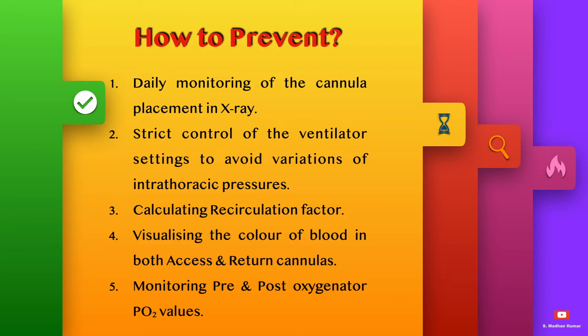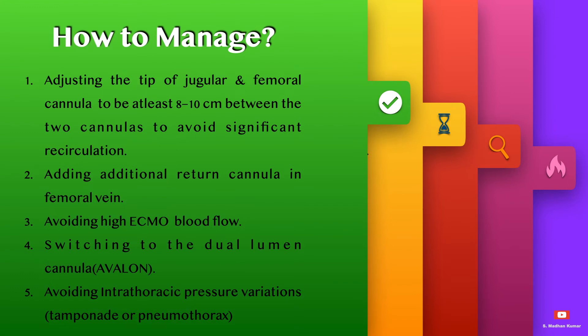Recirculation can be assessed and prevented by monitoring the cannula placement on X-ray every day, strict control of the ventilator settings to avoid variations of intrathoracic pressures, calculating the recirculation factor, visualizing the color of blood in both access cannula and return cannulas, and monitoring pre- and post-oxygenator PO2 values daily.